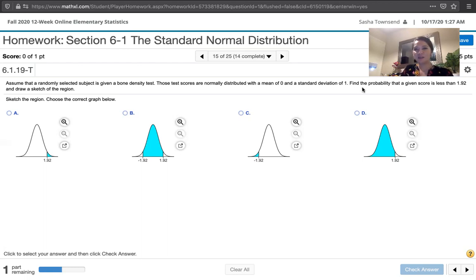We're asked to find the probability that a given score is less than 1.92 and draw a sketch of the region. That means we draw a standard normal distribution, and on the horizontal axis, we plot z equals positive 1.92, which is 1.92 standard deviations above the mean.